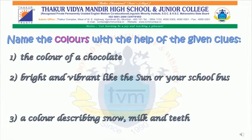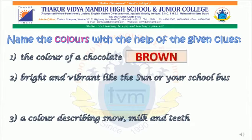So come on students, now let's have more fun by solving a few riddles on colours. You have to find out the answers with the help of the given clues. Let's begin! The colour of a chocolate — any guess, students? Yes, it is brown colour. Bright and vibrant, like the sun or your school bus — it's yellow colour.